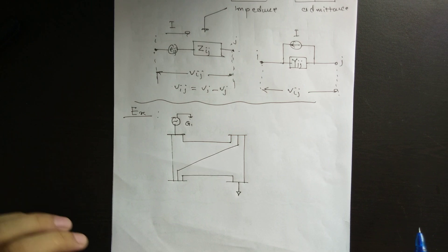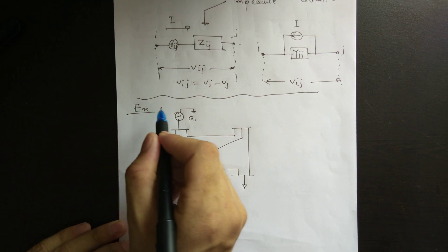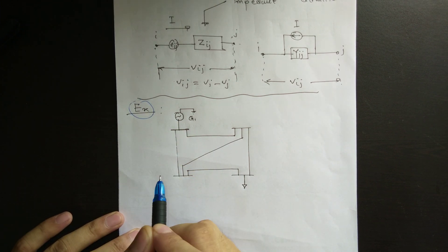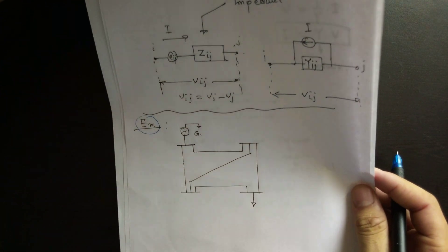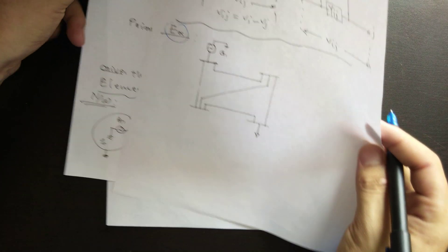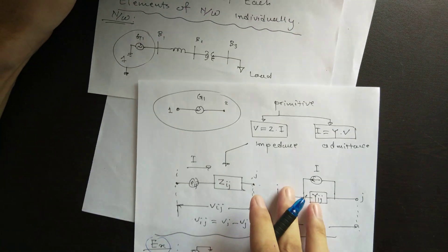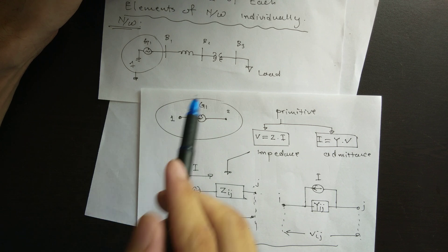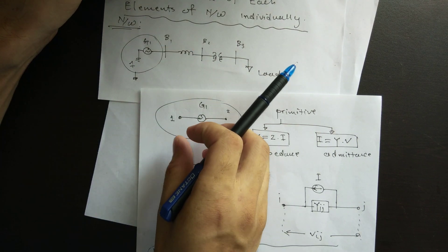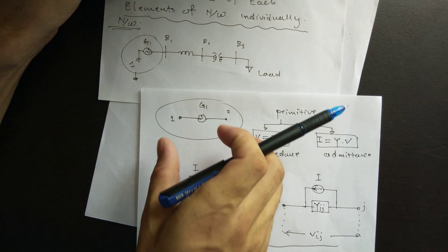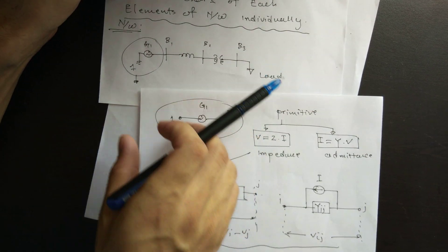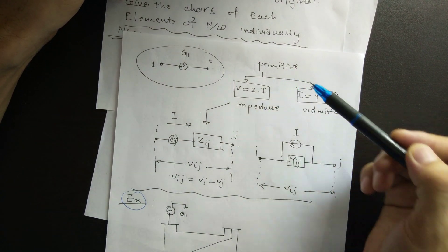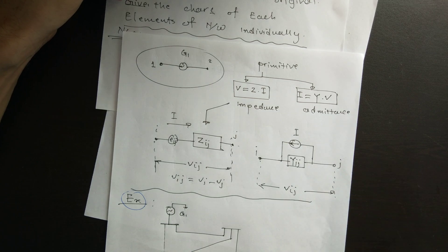Hello friends. Today we are going to go through an example of primitive network analysis. In previous lectures we learned from the example given in our system that we had brought the generator outside and understood it separately and analyzed it separately, hereby two methods: the primitive impedance network analysis and the primitive admittance network analysis.